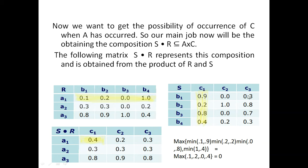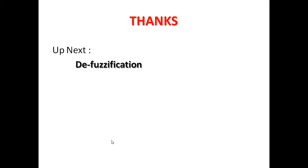Continuing, first row with the third column gives a maximum of 0.3. We repeat this process for the second row with each column, and the third row with each column — first taking minimums, then maximums — to fill the entire result matrix. From this new relation we can determine, for example, that the occurrence of C1 after A1 is 0.4 and the occurrence of C2 after A1 is 0.2. This is how composition works. In the upcoming video we are going to discuss classification. Thank you very much.